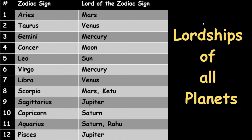What do you mean by the lord of a house in Vedic astrology? Each planet has the responsibility of handling either one or two houses, and so that planet becomes the lord of those houses. Look at this table to see which planet is the lord of which zodiac sign. Mars is the lord of Aries and Scorpio; Venus is the lord of Taurus and Libra. In this way, each planet has a department to handle — either one or two zodiac signs.